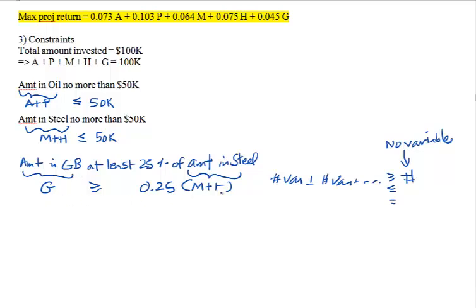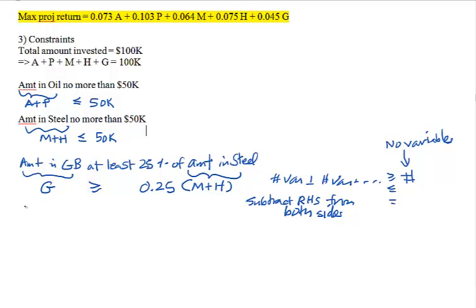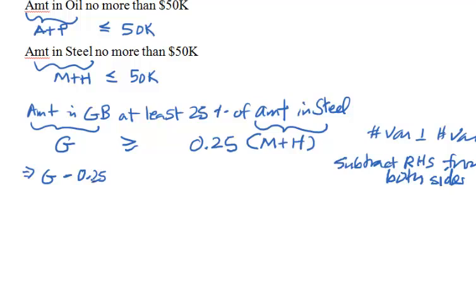This expression is not in standard format because the right-hand side contains variables. We can fix this by subtracting the entire right-hand side expression from both sides — effectively moving all terms to the left. That gives us G − 0.25(M + H) ≥ 0, and zero is just a number, so that's fine.